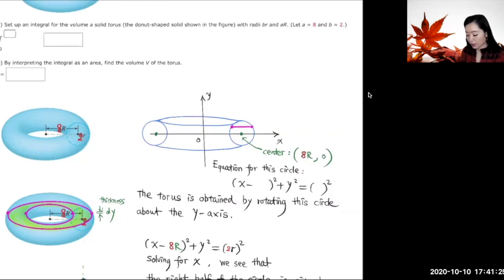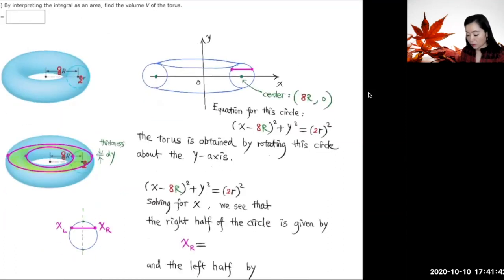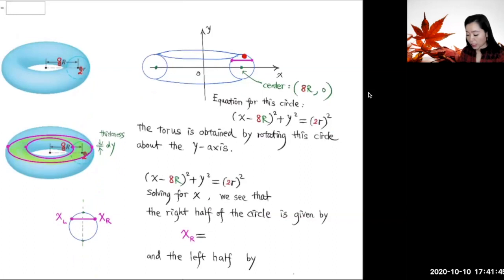Equation for this circle is (x - 8r)² + y² = (2r)². The radius for this circle here is 2r. Now, when you rotate this circle about this y-axis, you obtain this torus.